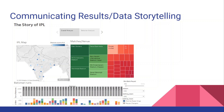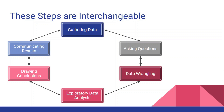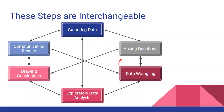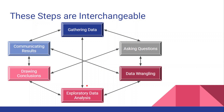Now the interesting thing is that these steps are not linear, so there is no hard and fast rule. After data wrangling you don't have to do EDA — you can jump from any step to any step. For example, after data gathering you can do data wrangling, then ask questions. Or suppose you have presented results and the CEO says your analysis is not good, so you go back to asking questions and then redo EDA. These steps are not linear — you can jump from any step to any step.